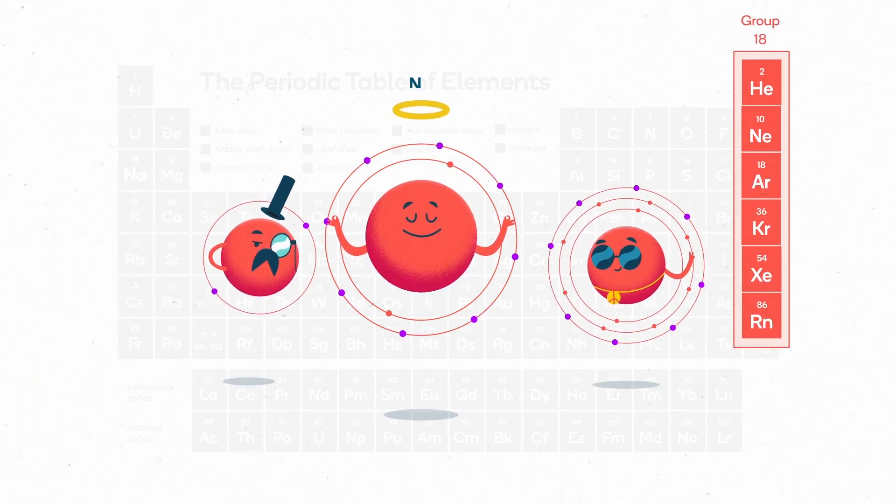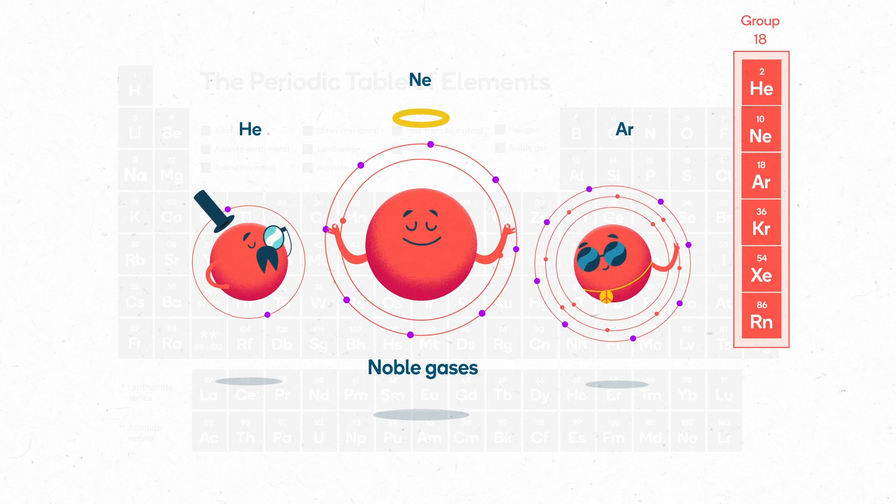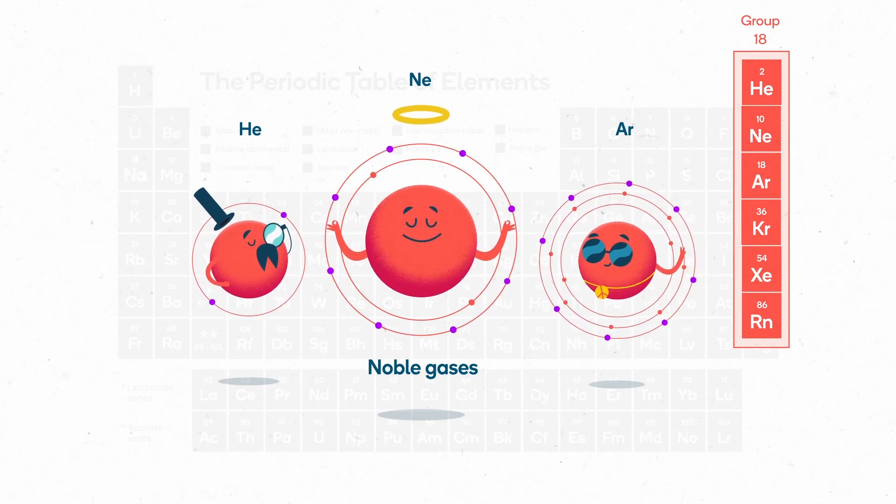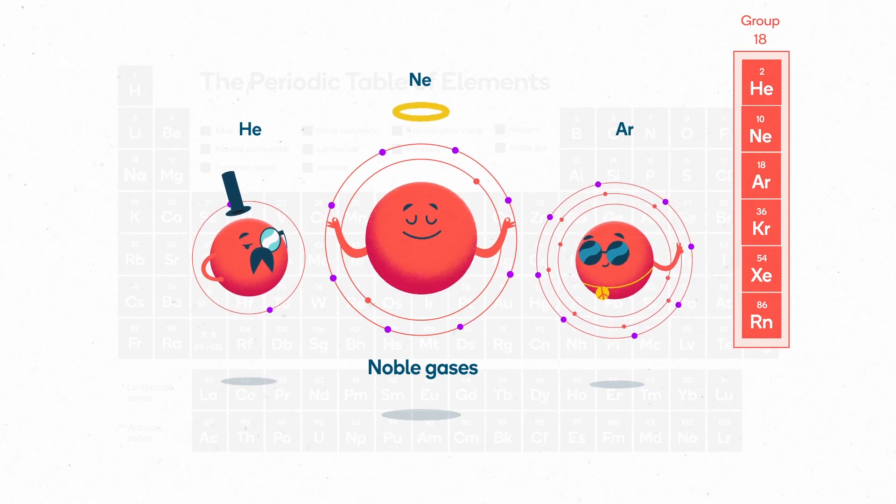Neon and the other elements in group 18 of the periodic table are known as the noble gases. They all have a full outer shell of 8 valence electrons, or 2 in the case of helium, and this makes them unreactive.